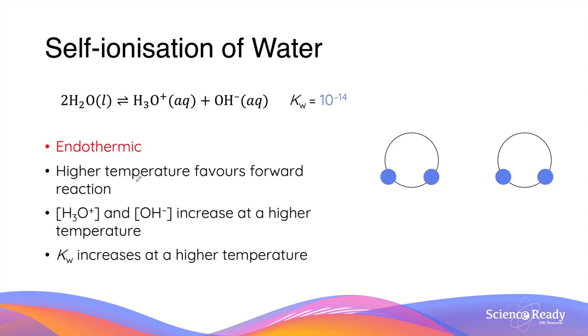Self-ionization of water is an endothermic reaction, so the forward reaction is favored at a higher temperature. This results in an increase in concentrations of hydronium and hydroxyl ions, which in turn increases the value of the equilibrium constant, Kw.